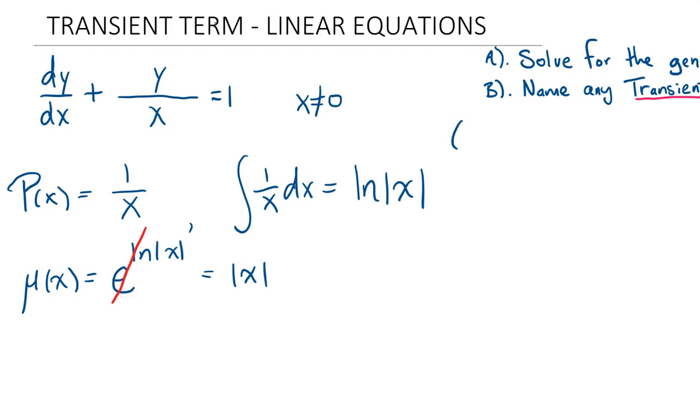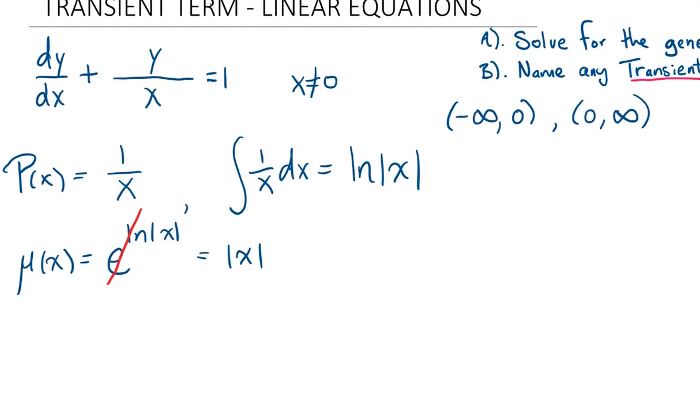So we have two intervals that we can choose. We can choose either negative infinity to 0, or 0 to infinity. And for the sake of solving this, let's choose the latter interval, because we will have only positive values of x, which means that we can drop the absolute value sign, and this just becomes x.